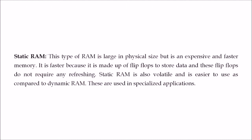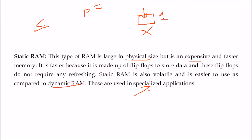Static RAM is large in physical size but expensive and faster. It does not use capacitors — instead it uses flip-flops such as J, D, T, and JK flip-flops, which are NAND or NOR gate circuitry that can keep one bit of data. Flip-flops store data without requiring any refreshing. Static RAM is also volatile, but easier to use than DRAM, and is used in specialized applications.